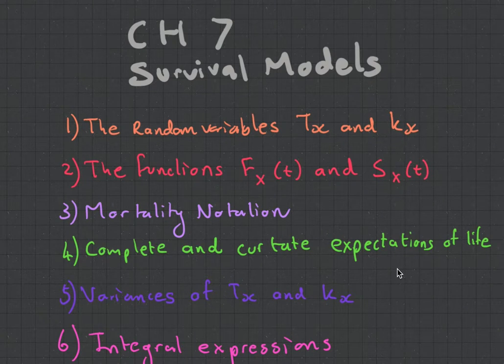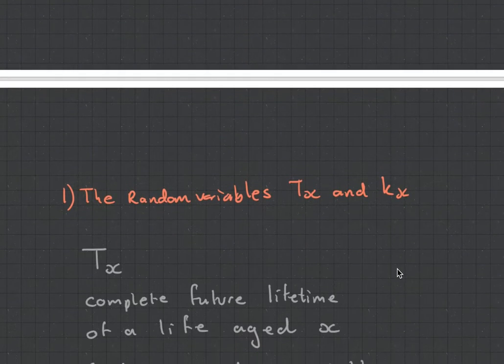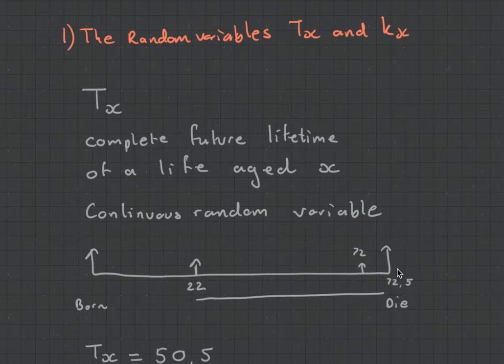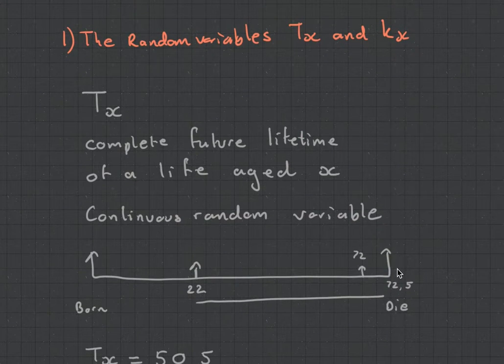So, let's jump straight into the material. We've got the random variables Tx and Kx. What exactly are they? Well, if we look at the definition of Tx, it is the complete future lifetime of a life aged x, and it is a continuous random variable. This gives us a lot of information, so let's unpack it.